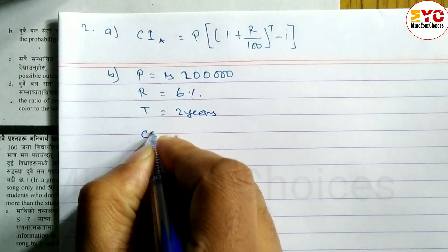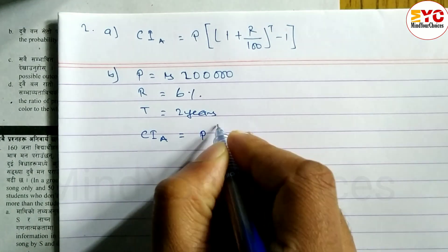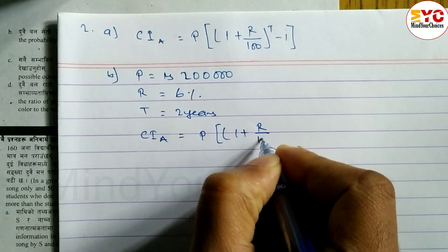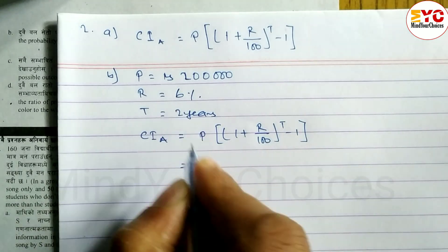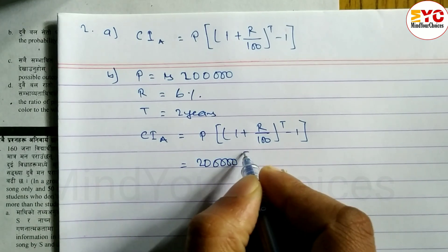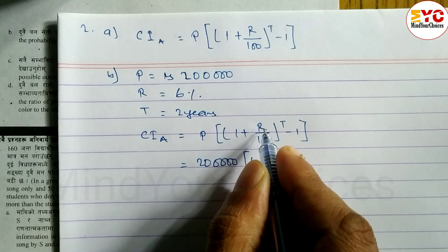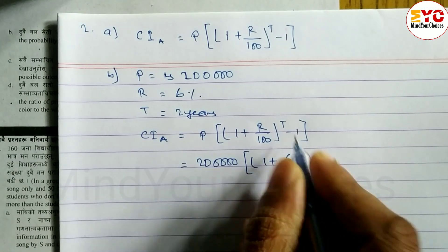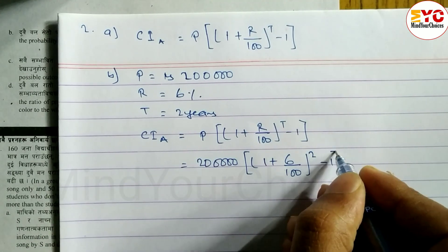We need to find CI annually using the formula: CI_A = P × [(1 + R/100)^T − 1]. Substituting: 2 lakhs × [(1 + 6/100)^2 − 1], which gives 2 lakhs × [(1.06)^2 − 1].